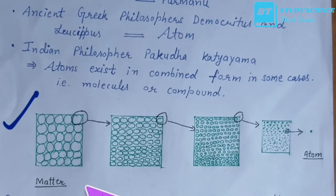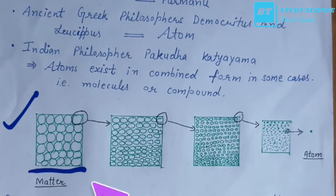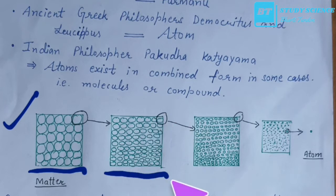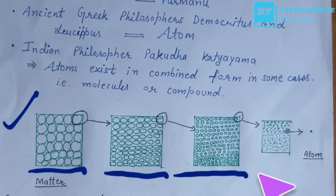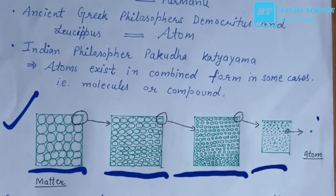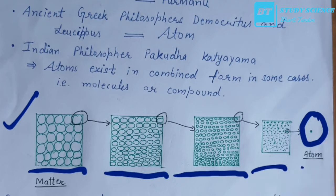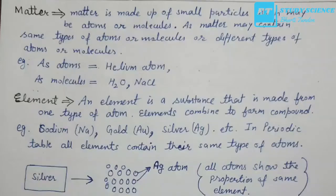Look at this figure. Matter is divisible — when we break matter we get smaller and smaller particles, and ultimately when we keep breaking them, we get one particle that is indivisible and that particle is called atom. Matter को तोड़ते रहें तो smallest particles मिलते हैं और ultimately वो particle जो further divide नहीं होता उसे atom कहते हैं।